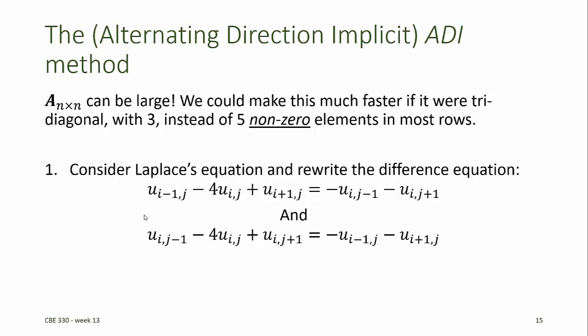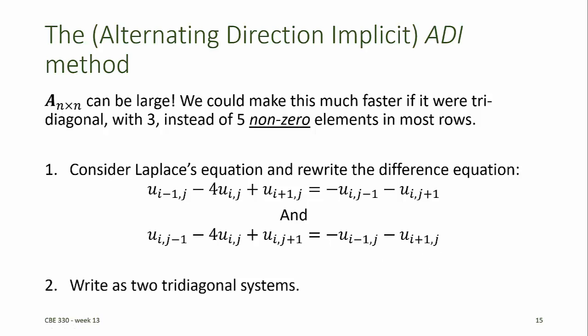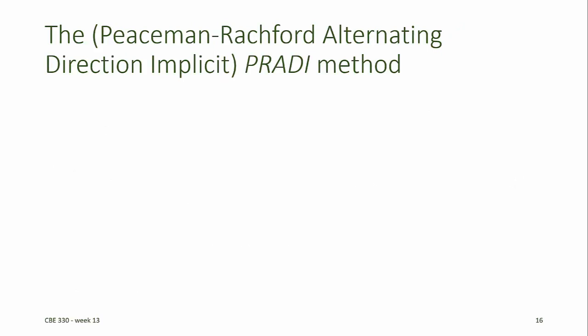To do that, we'll first rewrite the finite difference version of Laplace's equation so that all of the unknown elements in row j are on the left-hand side, and the two unknown elements corresponding to row j minus 1 and j plus 1 are moved over to the right-hand side. Then we'll rewrite it again so that all of the unknown elements in column i are on the left-hand side, and the two unknown elements corresponding to column i minus 1 and column i plus 1 are moved over to the right-hand side. This breaks the problem up into two tridiagonal systems. The Peaceman-Rachford alternating direction implicit, or ADI method, uses this approach.